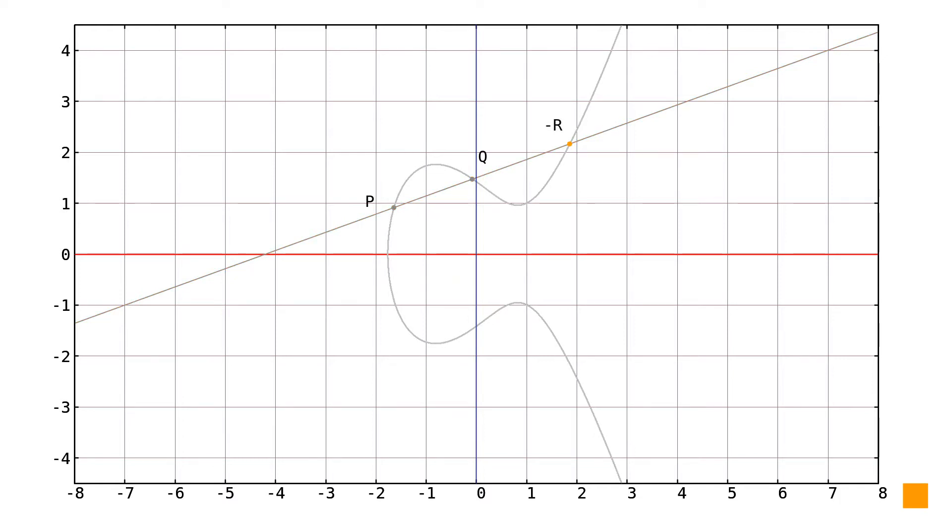To get the actual result, we use the point negation which we have already defined. Flipping the point minus r over the x-axis leaves us the point r, which is the sum of the points p and q.